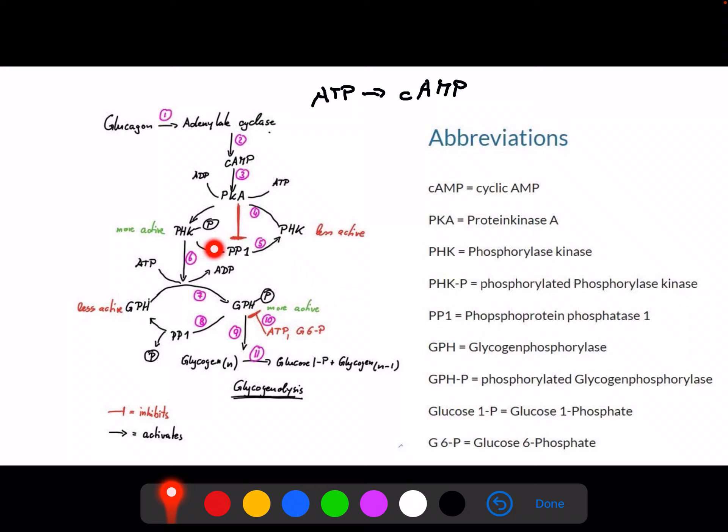What we see here is a typical example of what used to be called a futile cycle, but we know it's not a futile cycle. It is actually the concept of zero-order ultrasensitivity, and I've got a video on that, which indicates that it is a sort of switch. We can very easily switch, with the help of PKA, protein kinase A, between the less active and the more active form of phosphorylase kinase.